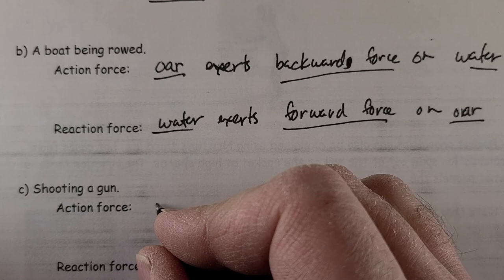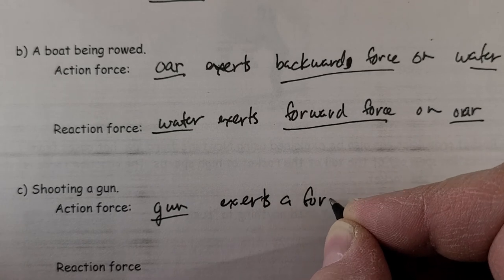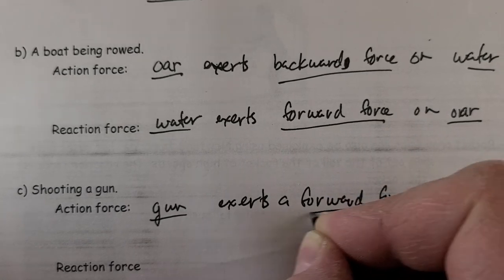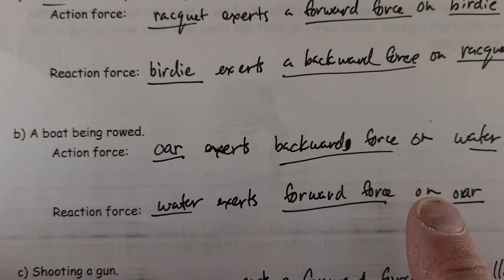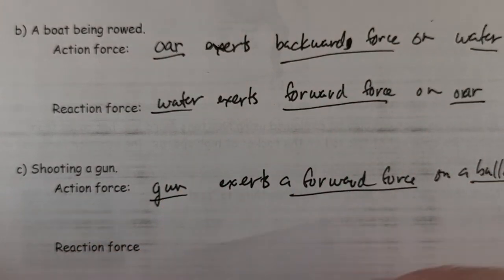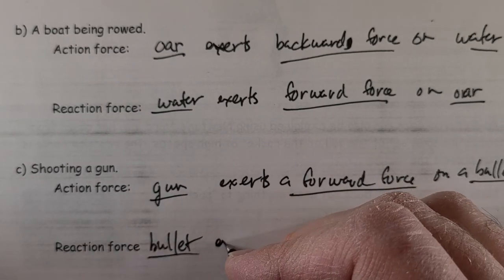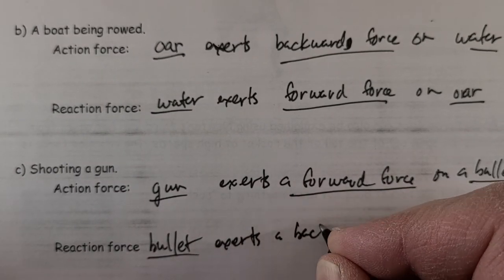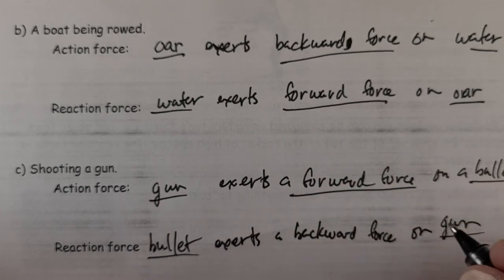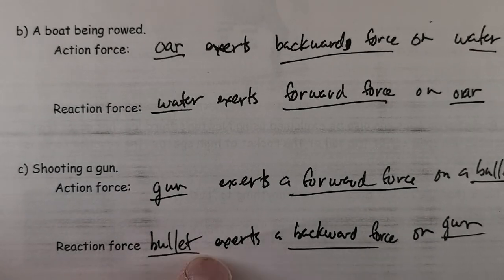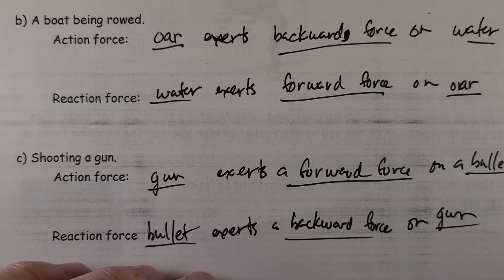Shooting a gun. So gun exerts a forward force on a bullet. And of course interchange these two objects around. Bullet is here, gun is here, and bullet exerts a backward force on gun. And of course the gun is attached to you, so your arm goes flying backwards, because it's hard to set up that bicep and gun action reaction system.